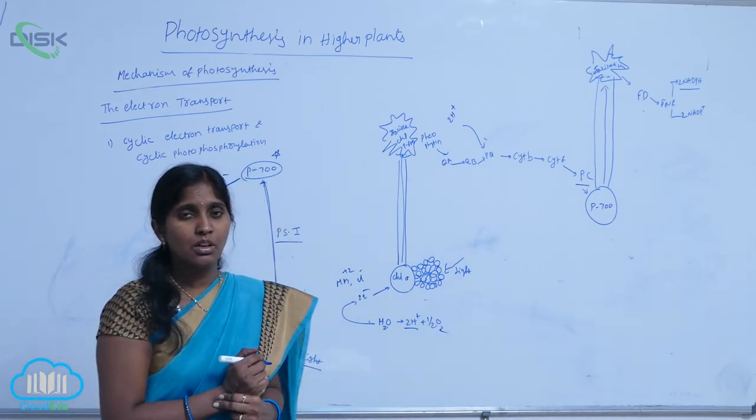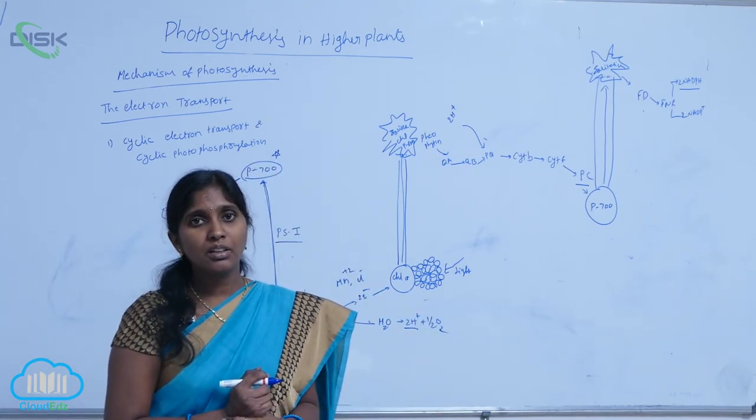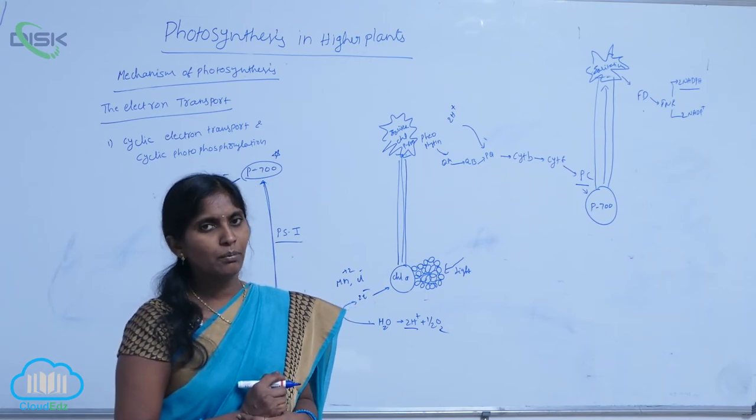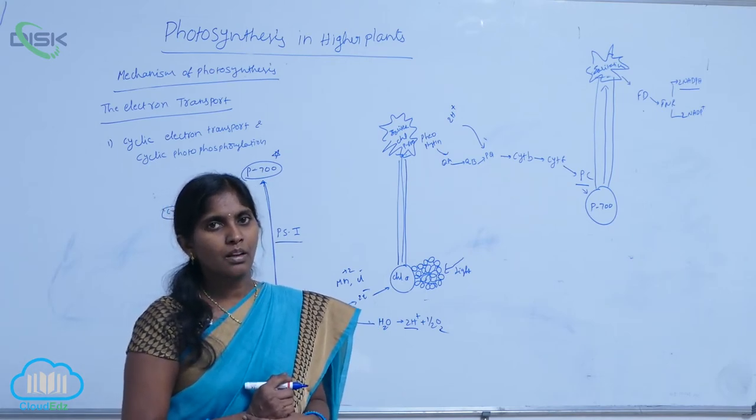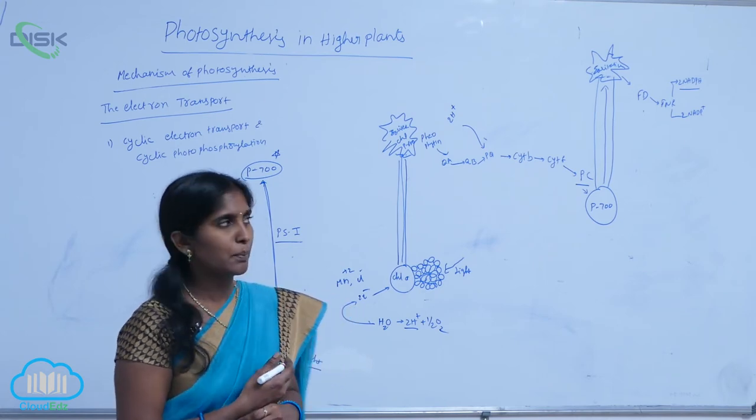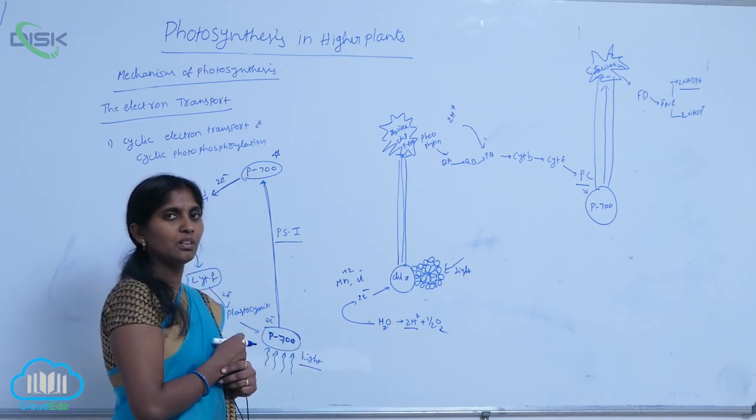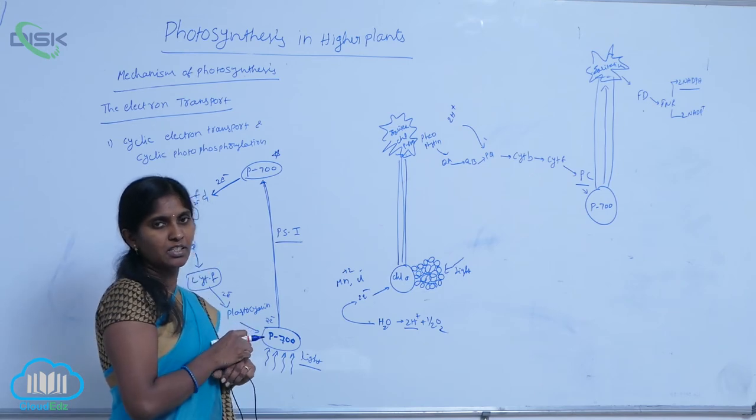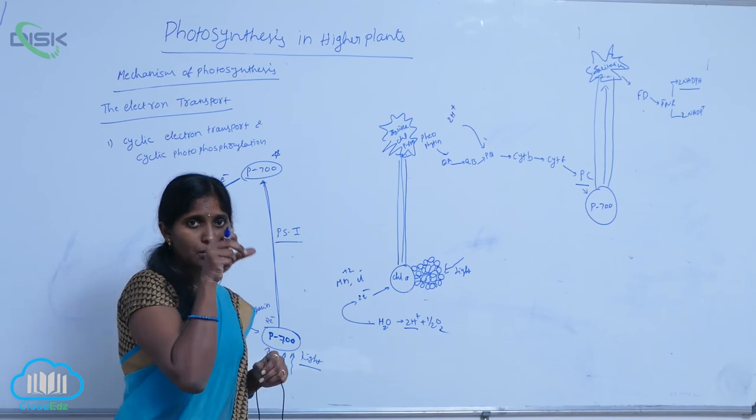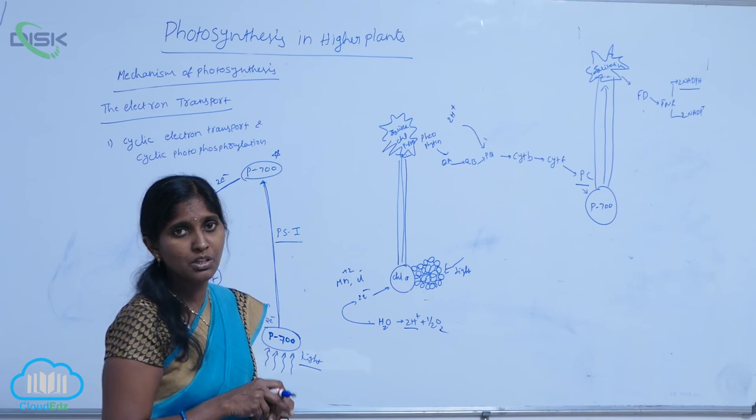The translocated protons produce a proton gradient. Against the proton gradient, they move from the lumen to stroma. While they are moving, they come through one enzyme, that is ATPase. When they are moving through the ATPase, for three protons, there is production of one ATP.